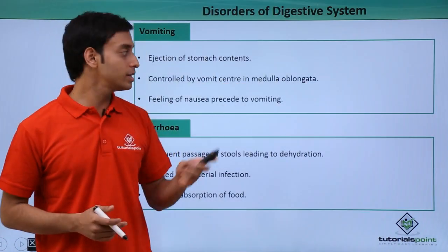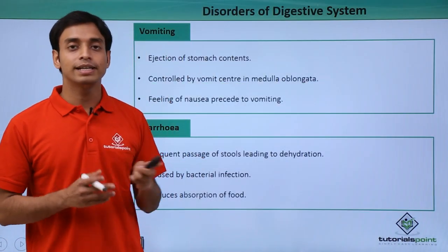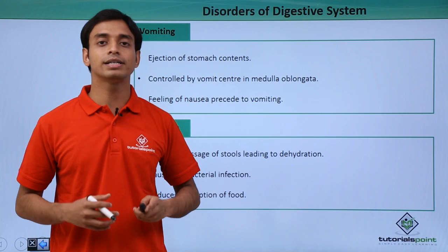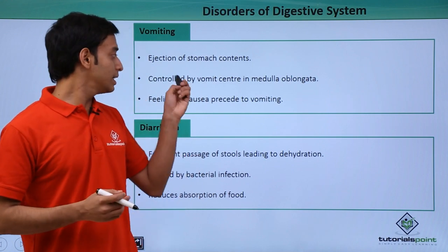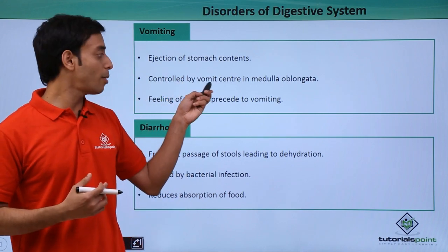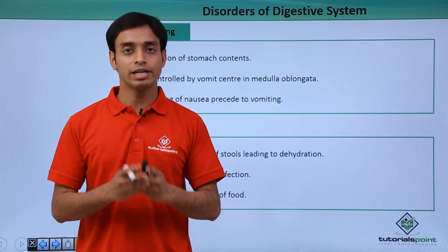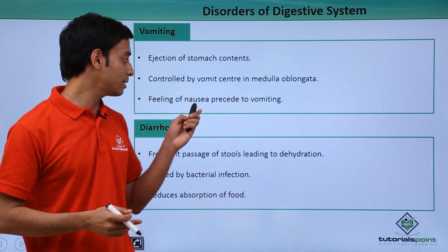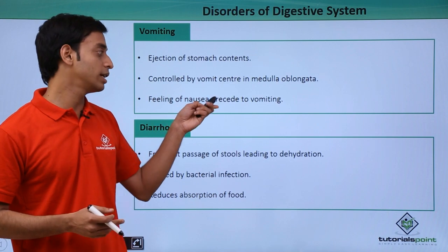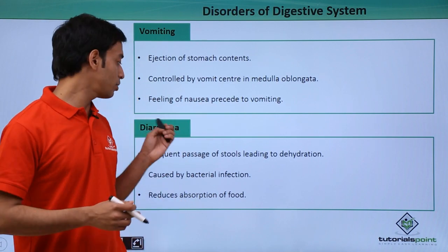The next type is vomiting. Vomiting is the ejection of the stomach contents through the mouth. This is mostly controlled by the vomit center in the medulla oblongata of the central nervous system. At times, a feeling of nausea can precede vomiting.